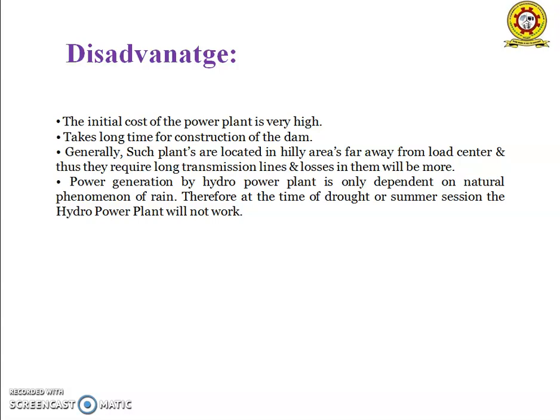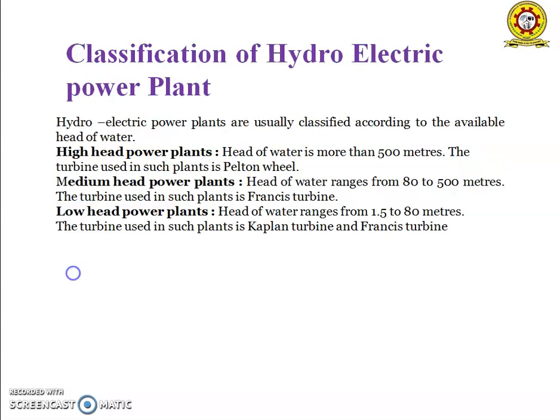It takes a fairly long time for the erection of such plants. The power produced depends upon the quantity of water, which in turn depends upon the rainy season, so this is a major disadvantage of the hydroelectric power plant. Classifications of hydroelectric power plants: hydroelectric power plants are broadly classified into three types based on the heads — high head power plant, low head power plant, and medium head power plant.